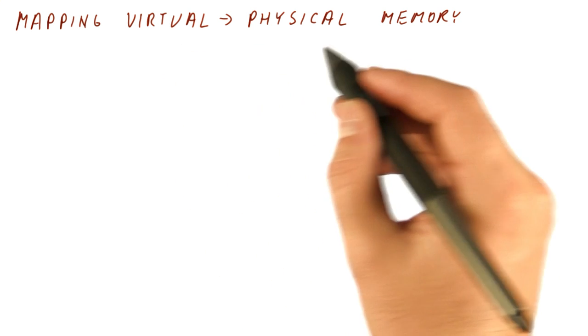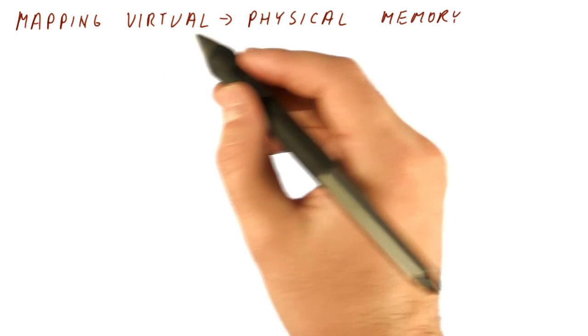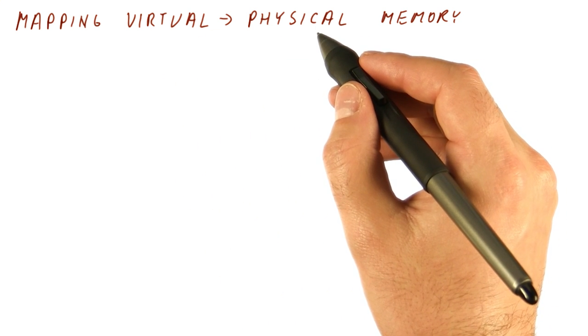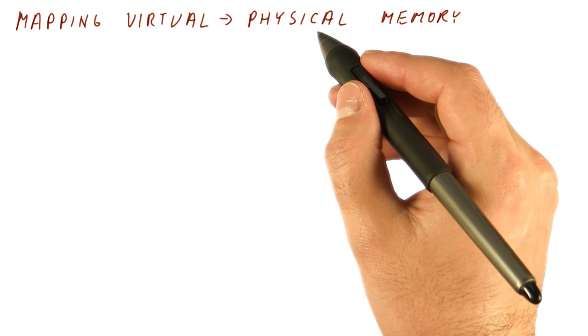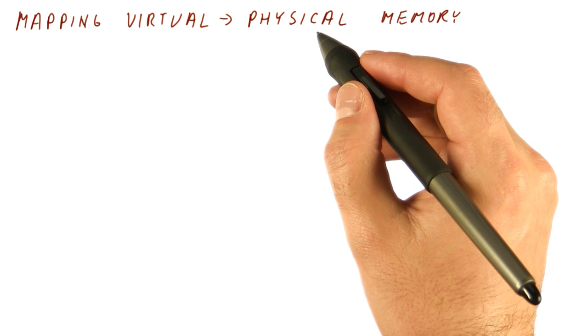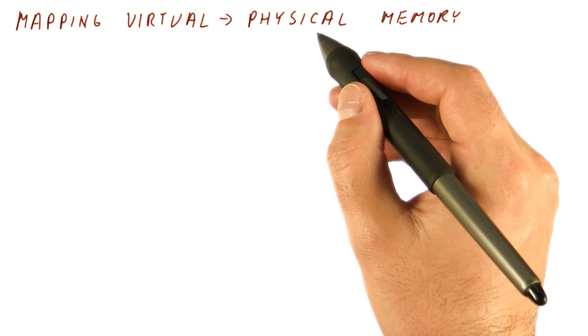This mapping would be really hard if every byte of virtual memory could map to an arbitrary byte in the physical memory. Then we would basically have to have a huge table of mappings and we don't want to do that, because that table would be very large and consume a lot of our memory.